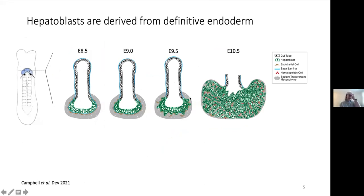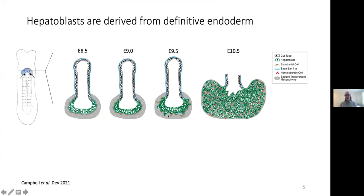My lab has been interested in the early stages of liver development. The liver buds out of the very early endoderm. At eight and a half days, you've got this gut tube, and on the ventral side of the gut tube you start to see a thickening of the endodermal cells — an epithelial sheet of cells surrounded by endothelial cells and the mesenchyme, which we call the septum transversum. By about E9.5, you start to see these hepatoblasts delaminate from the gut tube and migrate into the mesoderm. At ten and a half, you start to get ingression of the hematopoietic cells, and the liver starts to look really red.